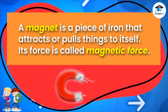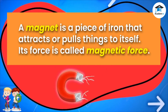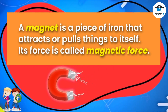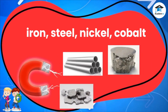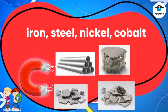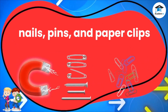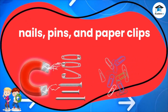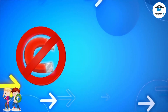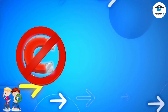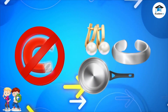A magnet is a piece of iron that attracts or pulls things to itself. Its force is called magnetic force. It pulls or attracts objects made of iron, steel, nickel, and cobalt. Examples of these are nails, pins, and paper clips. However, not all metals are attracted to magnets. Examples of such materials are aluminum pans, gold earrings, and silver bracelets.